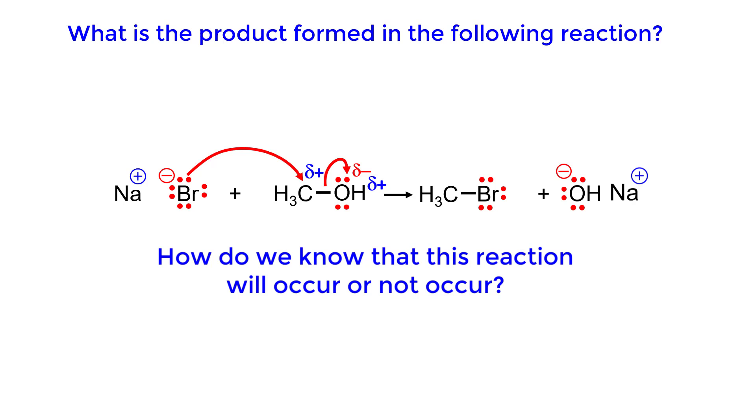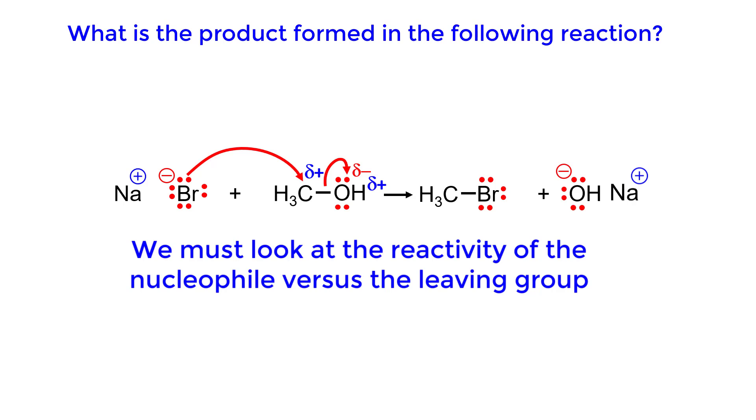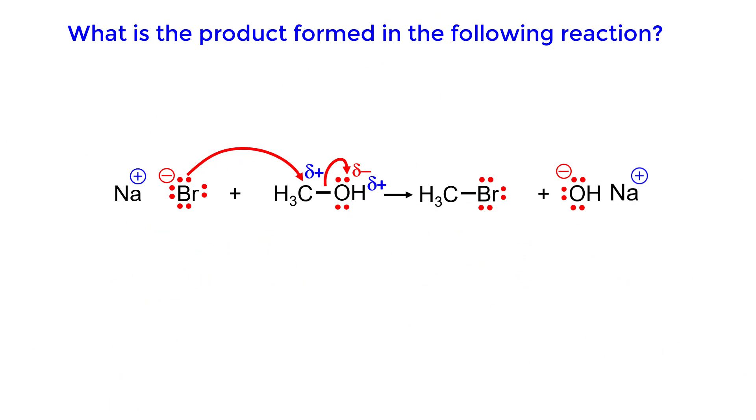How do we know that this reaction will occur or not occur? We must look at the reactivity of the nucleophile versus the leaving group. The bromide ion is a good nucleophile, but a weak base.